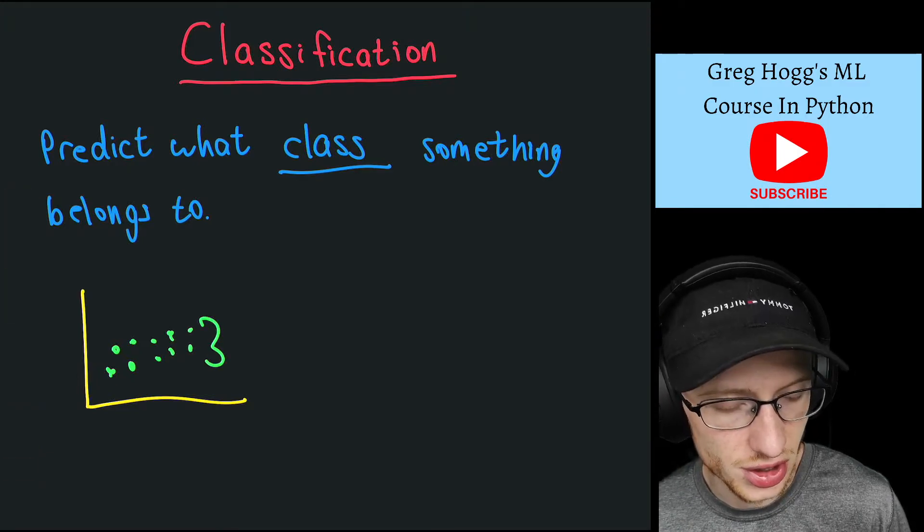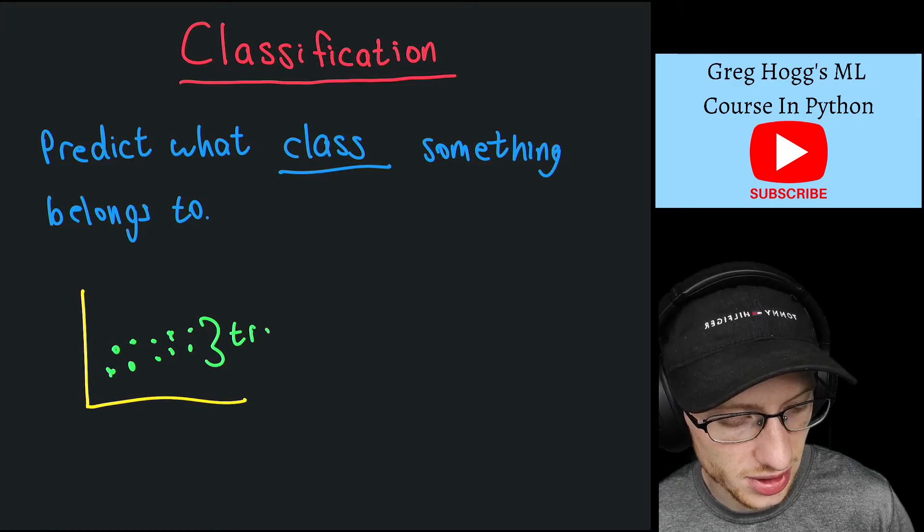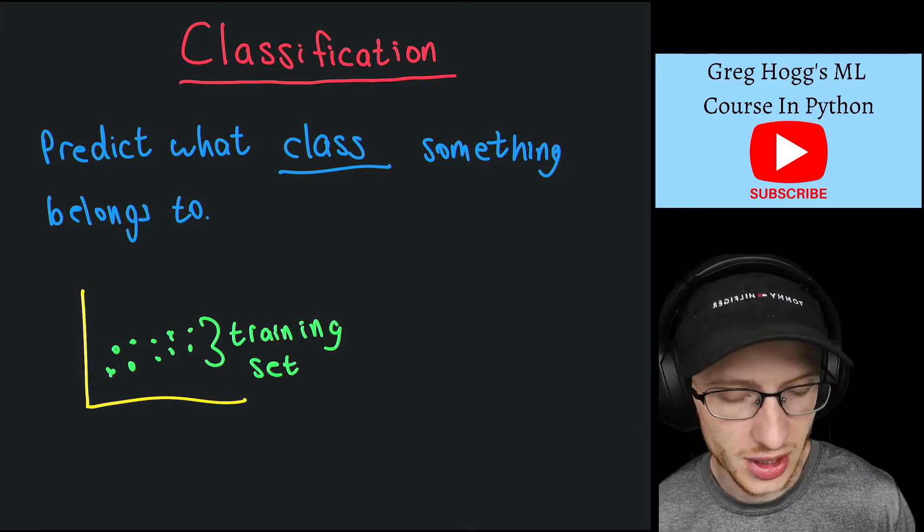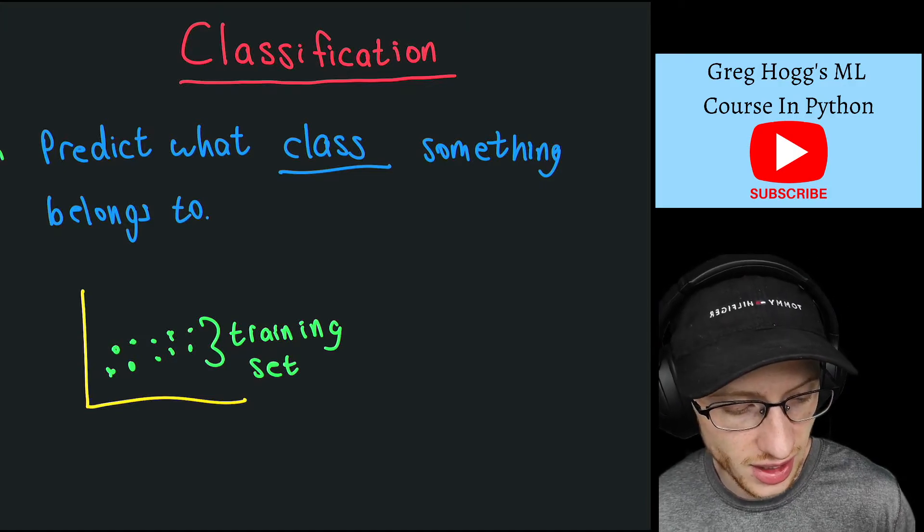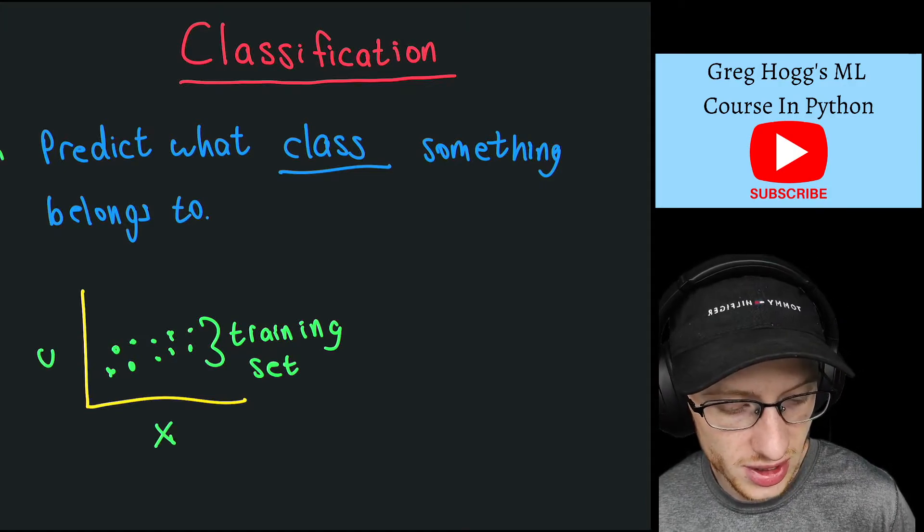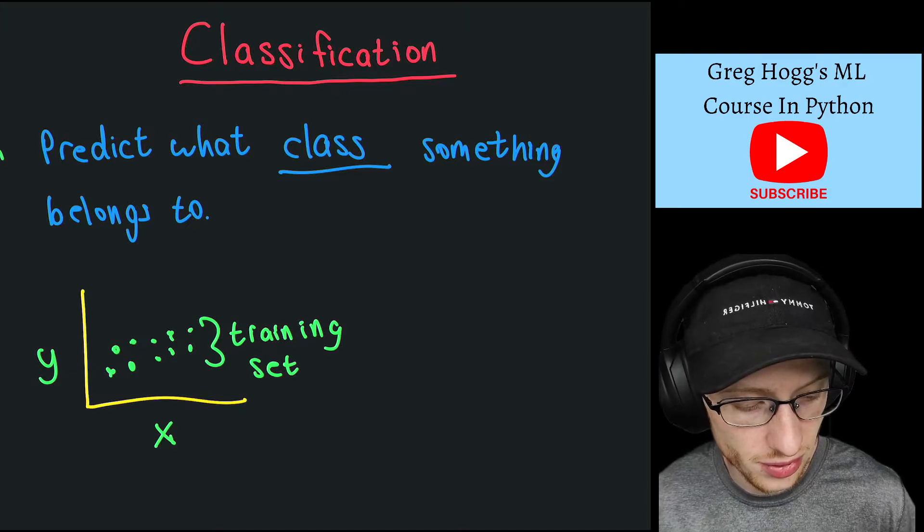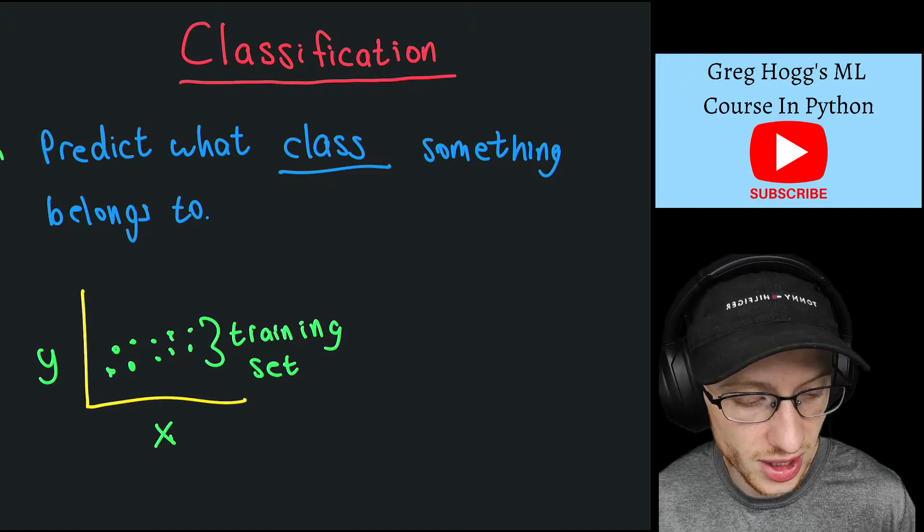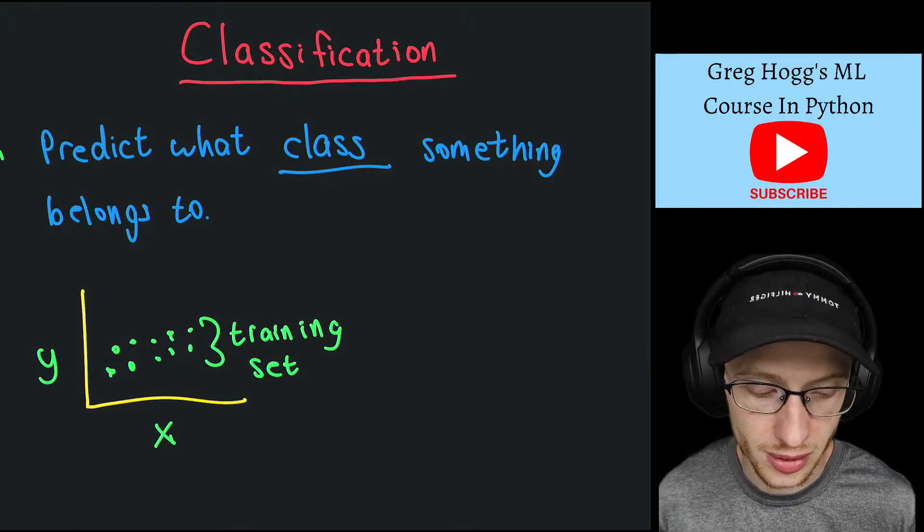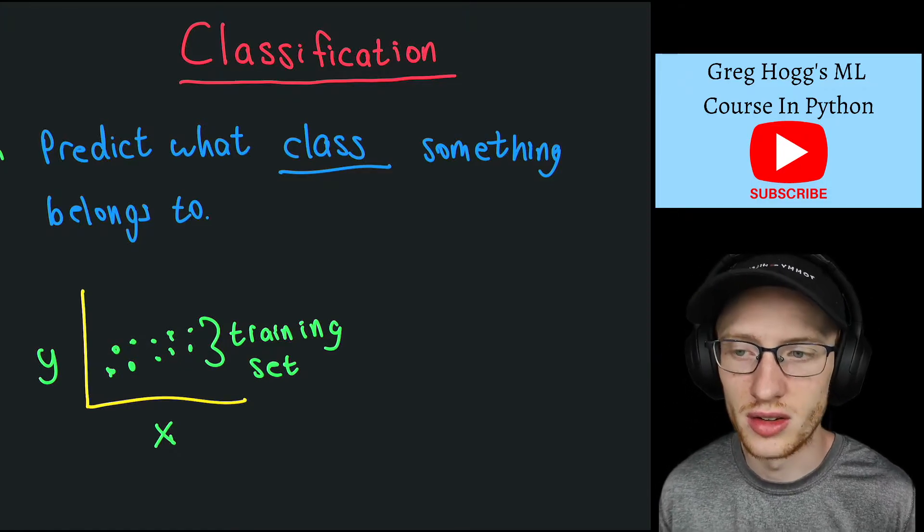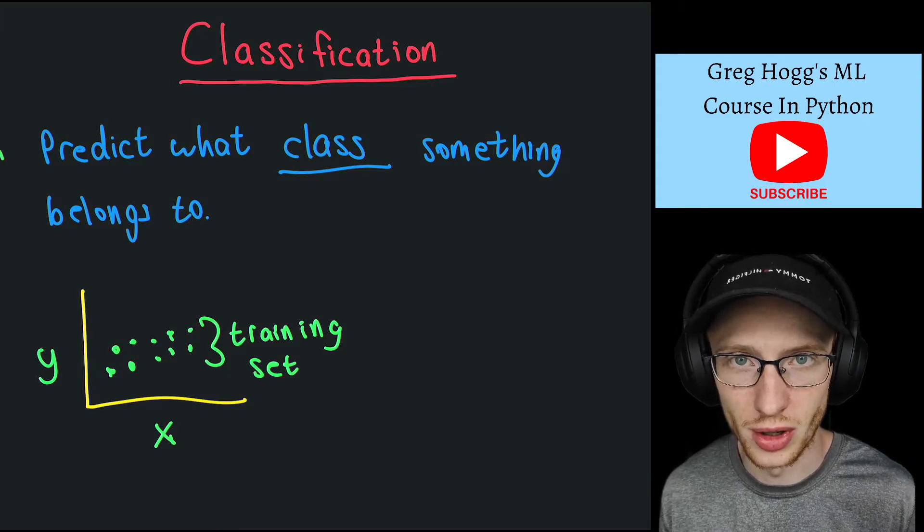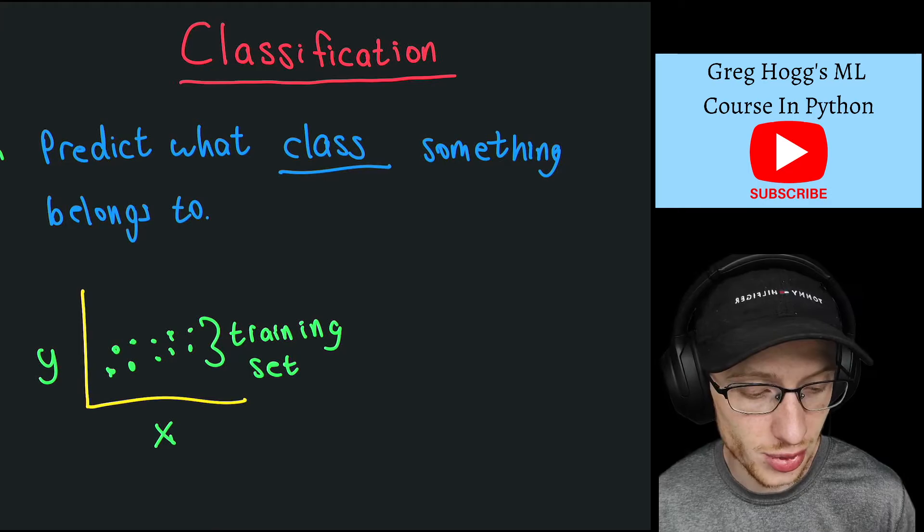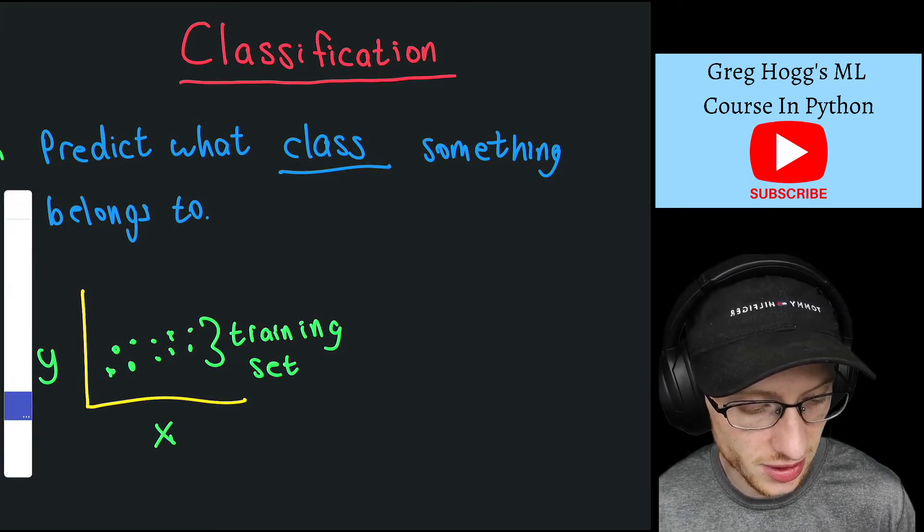We're given a training set of information. The training set means we have both x and y. For each person or whatever it is, we have their input and their output. But when actually using the model, we wouldn't have their outputs.